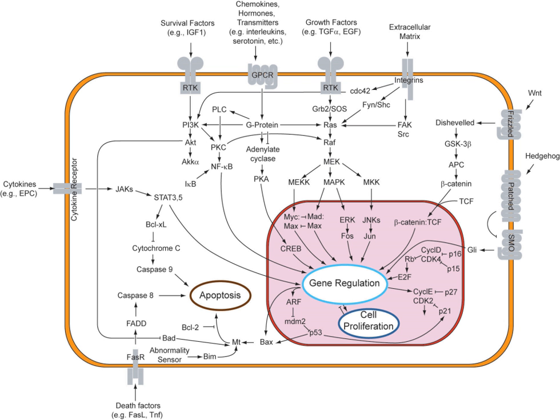In the worm Caenorhabditis elegans, two cells of the developing gonad each have an equal chance of terminally differentiating or becoming a uterine precursor cell that continues to divide. The choice of which cell continues to divide is controlled by competition of cell surface signals. One cell will happen to produce more of a cell surface protein that activates the notch receptor on the adjacent cell. This activates a feedback loop that reduces notch expression in the cell that will differentiate and increases notch on the surface of the cell that continues as a stem cell.